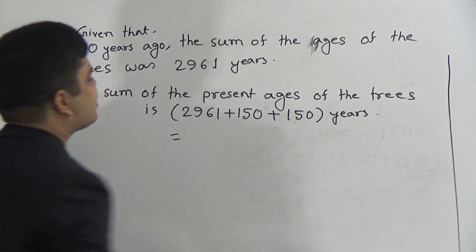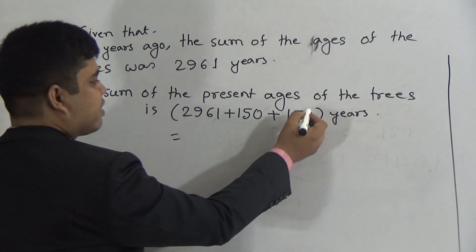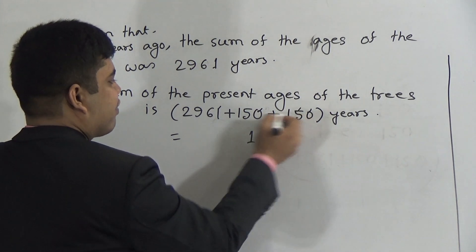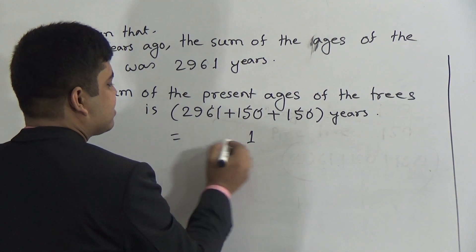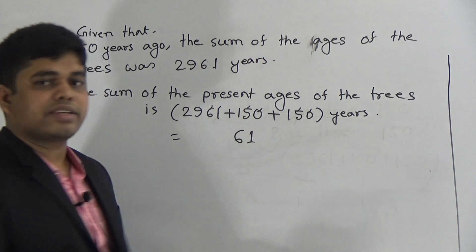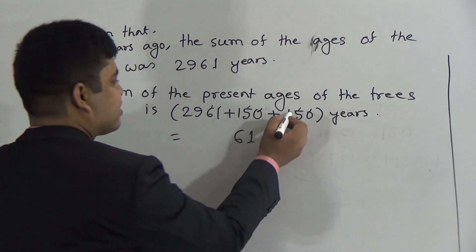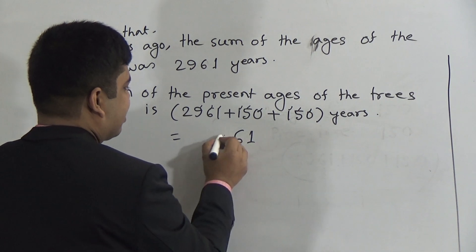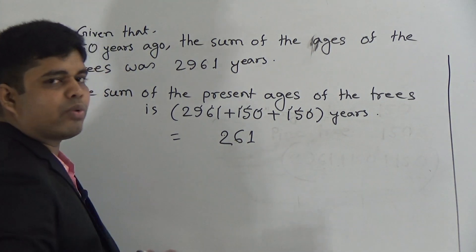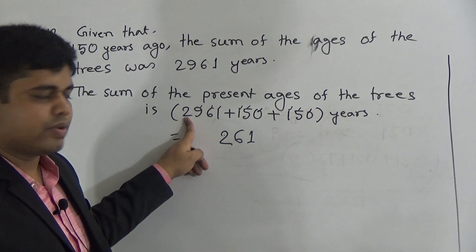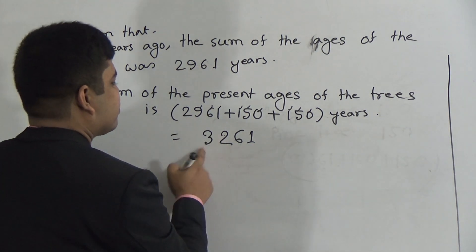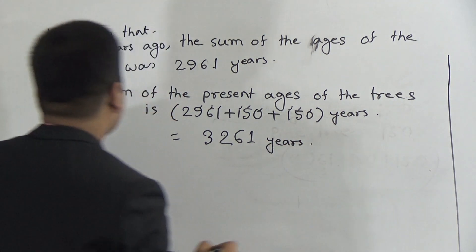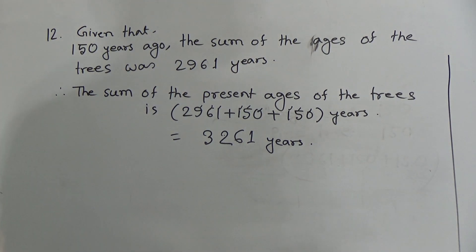Now we do the addition. In the ones place: 1 plus 0 plus 0 equals 1. In the tens place: 6 plus 5 plus 5 equals 16 — write 6, carry 1. That 1 is added to the hundreds digit: 1 plus 9 plus 1 plus 1 equals 12 — write 2, carry 1. That 1 is added to the thousands digit: 2 plus 1 equals 3. So 3,261 is the sum of the present ages of both trees.